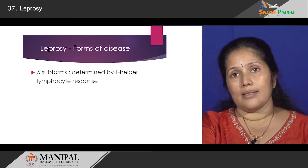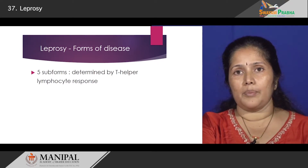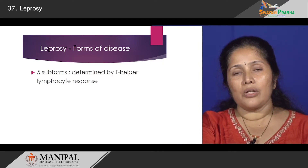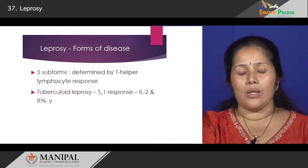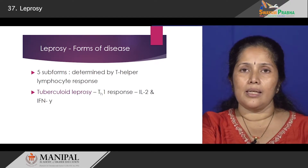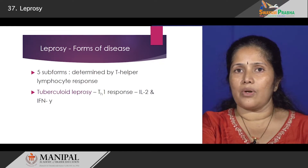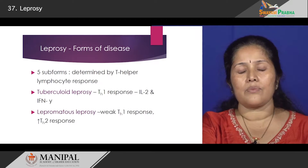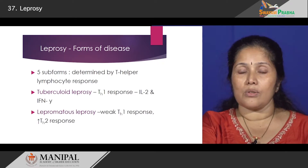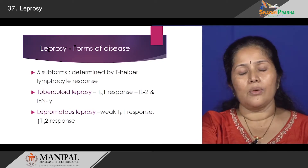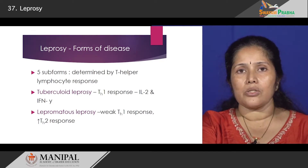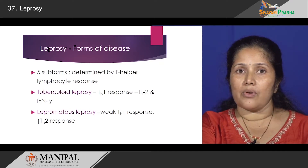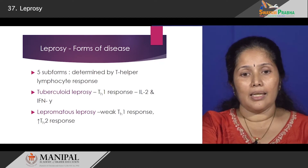What decides these subforms in leprosy? It is determined by the function of the T helper cells. In tuberculoid leprosy there is a high response from T helper 1 cells and they produce a lot of interleukins as well as interferon gamma. It is almost the reverse in the lepromatous end, where there is a very weak T helper 1 cell response while the response from T helper 2 cells is markedly increased.